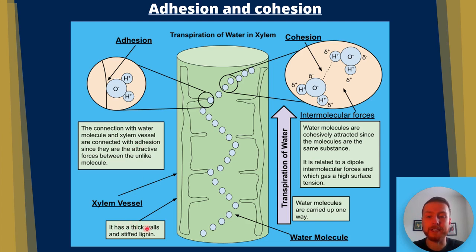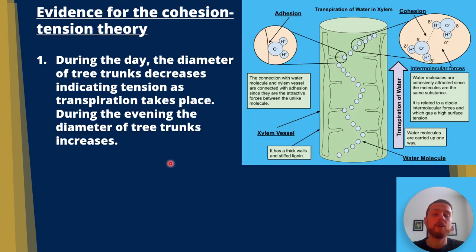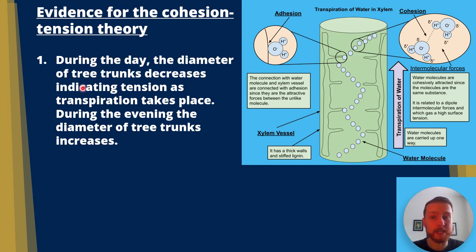The xylem vessel has walls that are strengthened with lignin — a really tough, strong polysaccharide in plants that gives structure. What is the evidence for the cohesion tension theory? Number one: during the day the diameter of tree trunks decreases, indicating tension as transpiration takes place.